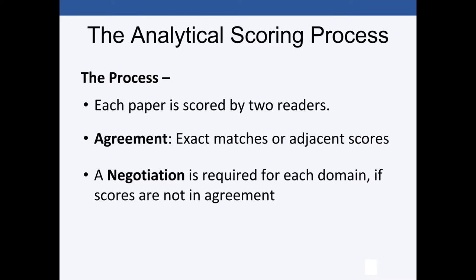There's a scoring process I'd like to describe. Each paper is scored by two readers and those two readers want to have an agreement — they want their scores to either match or be adjacent. A match means each reader gave the same level of performance to that student. Adjacent means the scoring performances are right next to each other — for example, one scorer gave a two and one gave a three. If we have a situation called a negotiation, it's required for each domain if the scores are not in agreement. We want to make sure we have matches or adjacent scores.